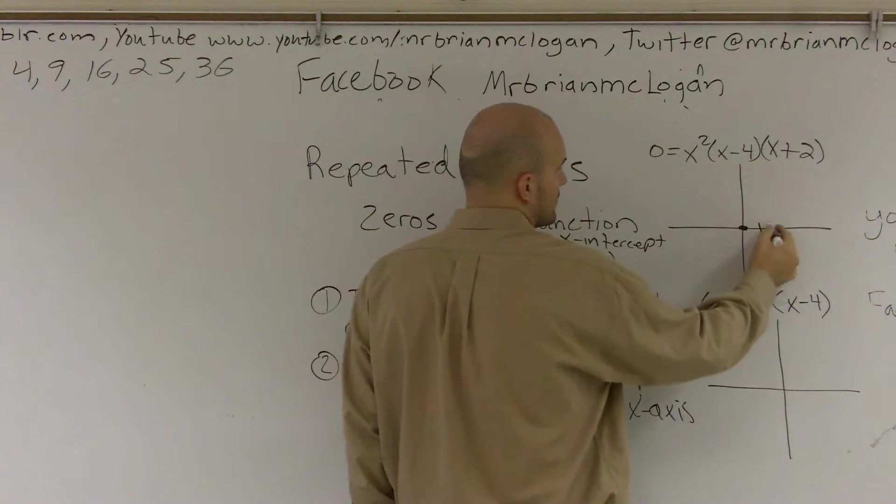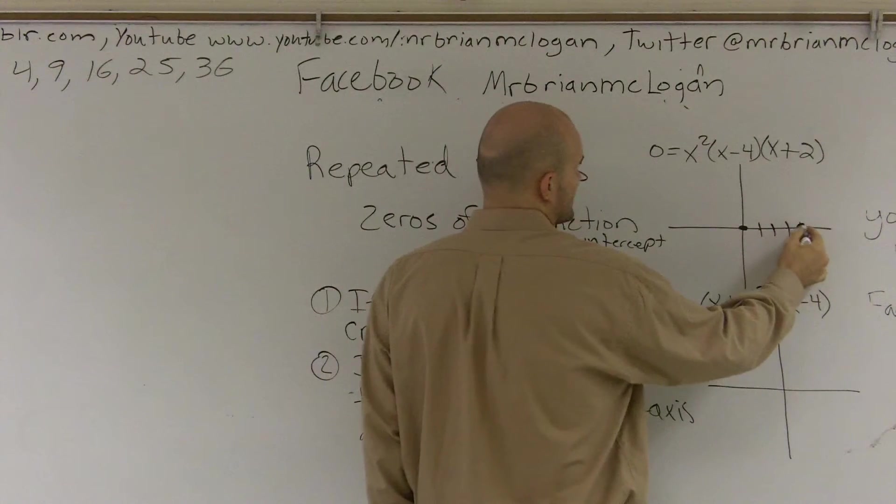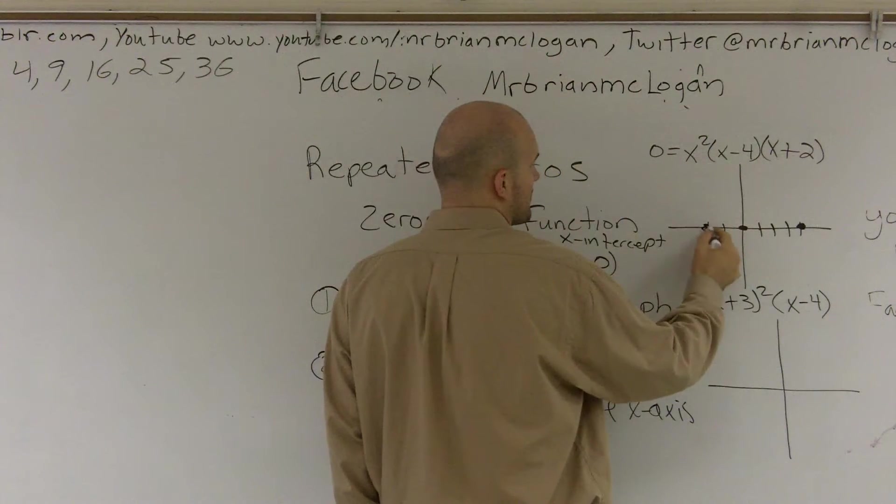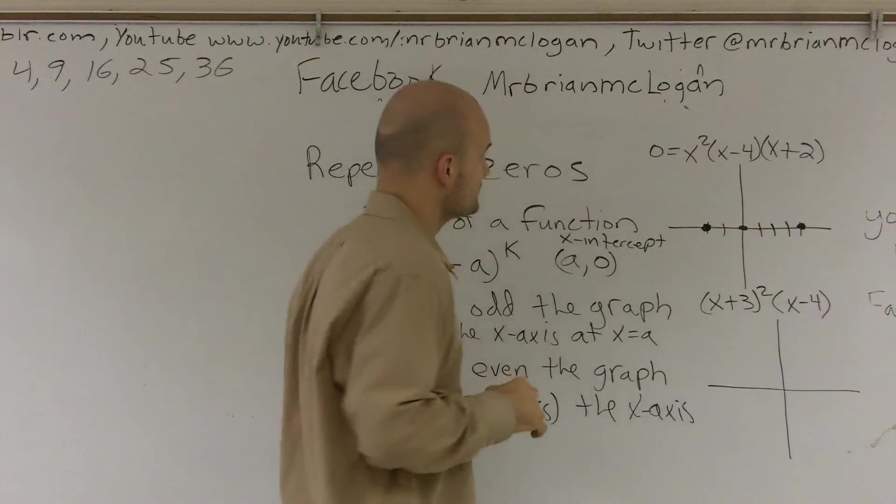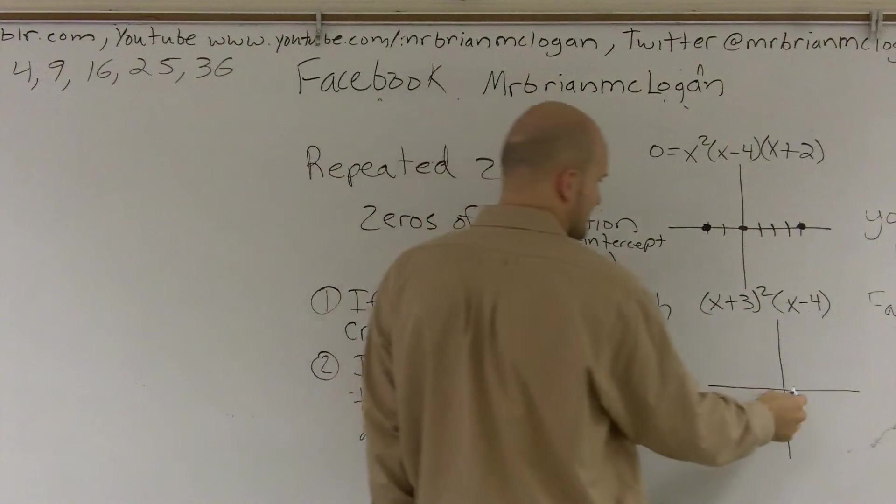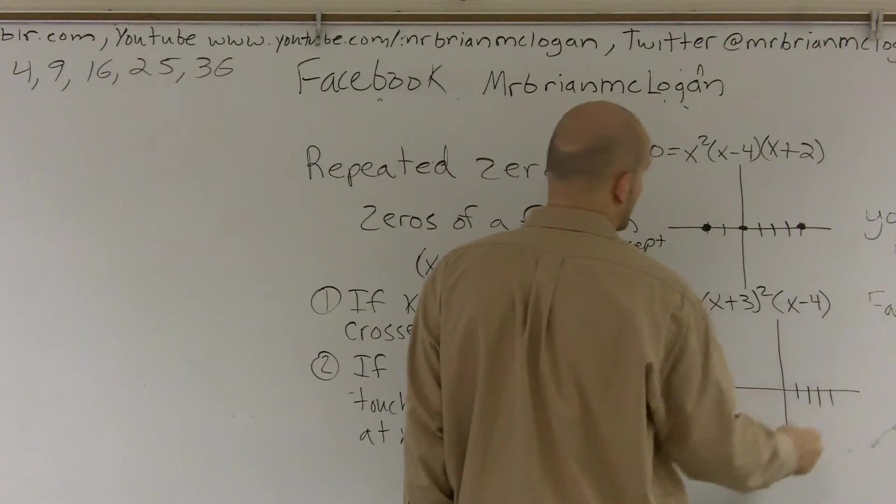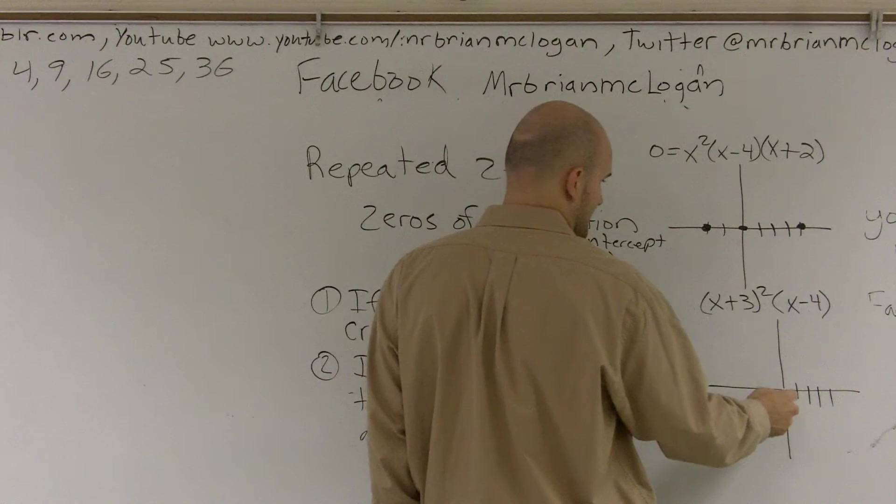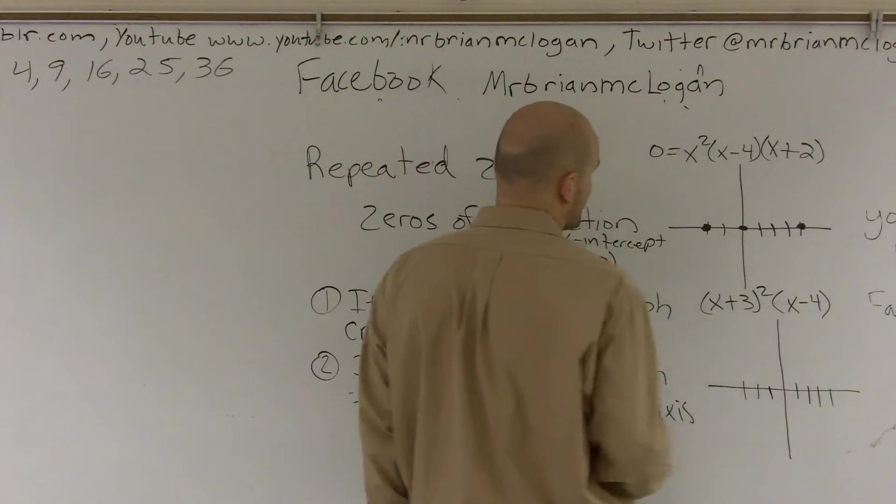So I have a zero, x equals 4, and negative 2. And then here I have x equals 4: 1, 2, 3, 4. And then I have negative 2: 1, 2. All right.